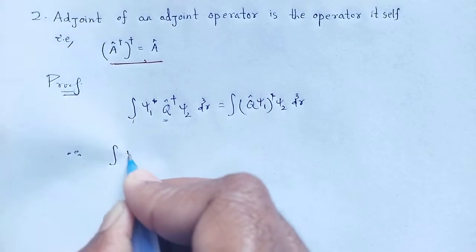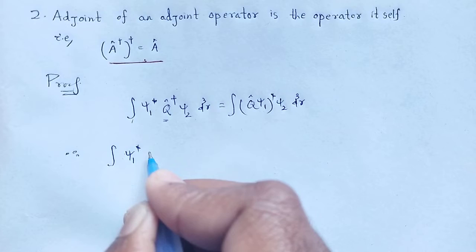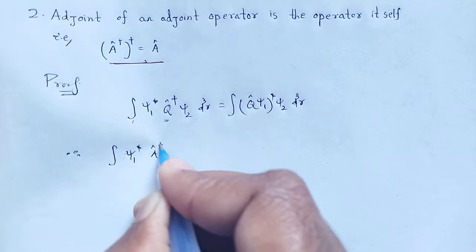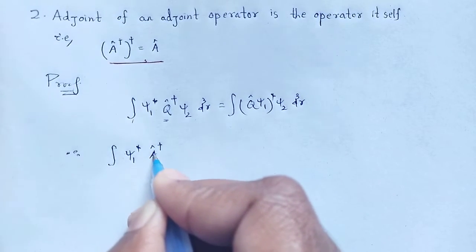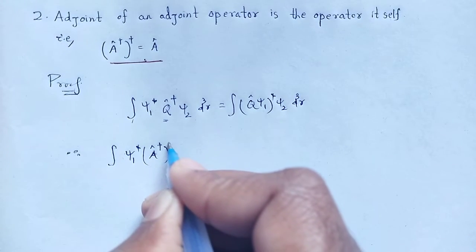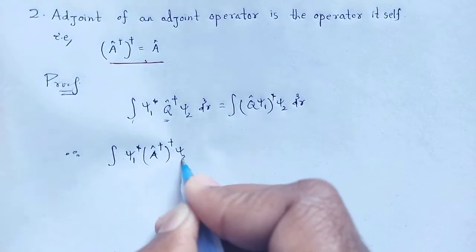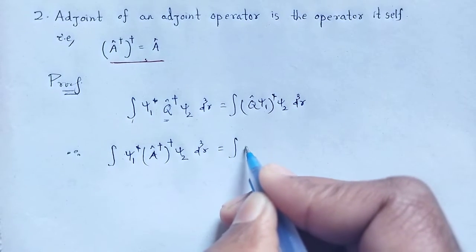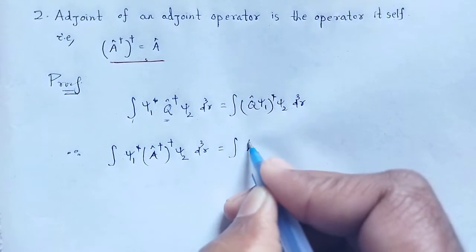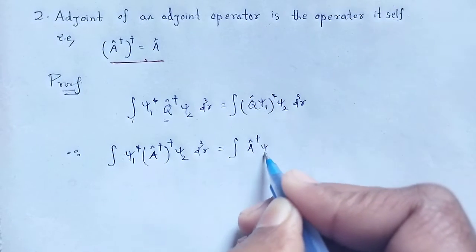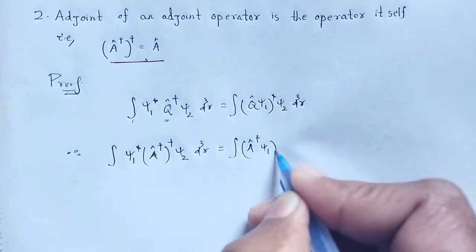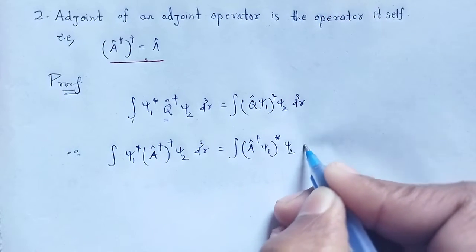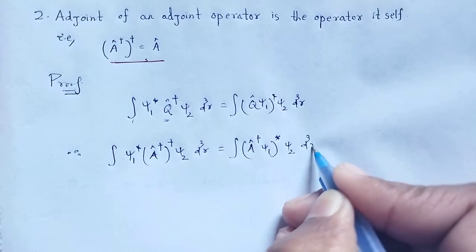In place of that operator, I implement A-cap: integration psi-1-star A-cap-dagger psi-2 dτ is equal to integration over A-cap-dagger psi-1-star psi-2 dτ.